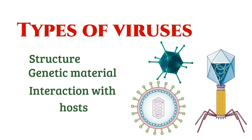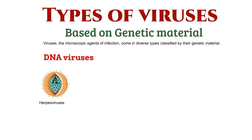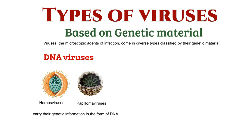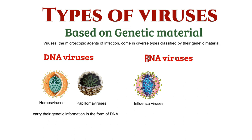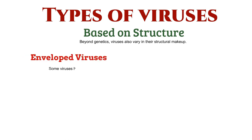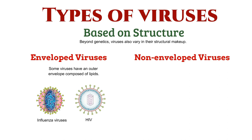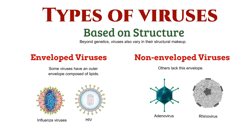Let's explore them one by one. Viruses, the microscopic agents of infection, come in diverse types classified by their genetic material. First, we have DNA viruses, like herpes viruses and papillomaviruses, carrying their genetic information in the form of DNA. On the other hand, RNA viruses, such as influenza viruses and HIV, utilize RNA as their genetic blueprint. Beyond genetics, viruses also vary in their structural makeup. Some viruses sport an outer envelope composed of lipids, like influenza virus and HIV, while others lack this envelope, such as adenovirus and rhinovirus.